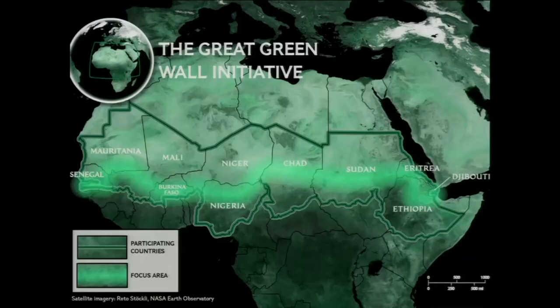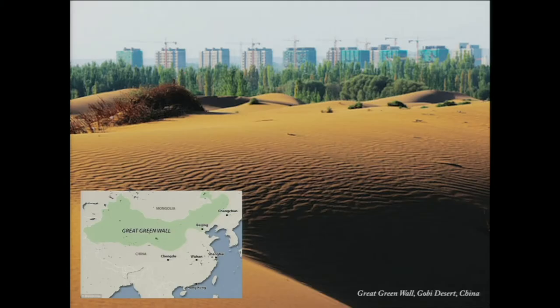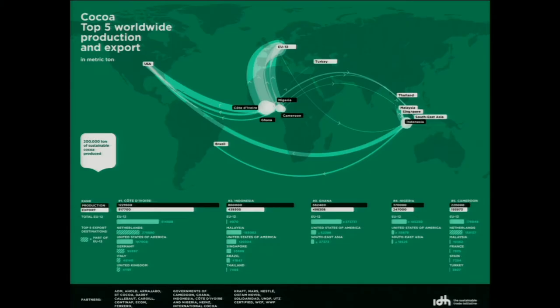So agri-urbanization is my forecast — the fusion and integration of food production, farmland, and urban cities. This is an ongoing Harvard University-based project. This is the Great Green Wall initiative to stop the Sahara desert from expanding south in Africa. And in China, against the expansion of the Gobi Desert, a wall has already been built. But this is not interesting enough, perhaps, so we focused on the place with the biggest production of cocoa.